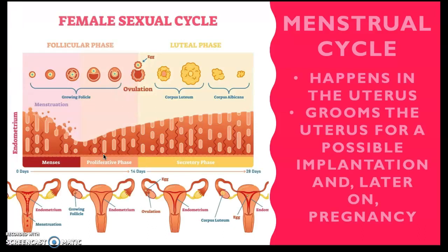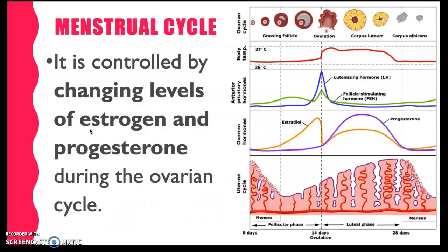Next would be the menstrual cycle. The menstrual cycle happens in the uterus, and this is when the uterus is prepared for possible implantation and later on pregnancy. The menstrual cycle is also related to the ovarian cycle because of the hormones being released, which help in the preparation of the body — particularly of the uterine wall — to become thicker to prepare for pregnancy. The menstrual cycle is also controlled by changing levels of estrogen and progesterone.